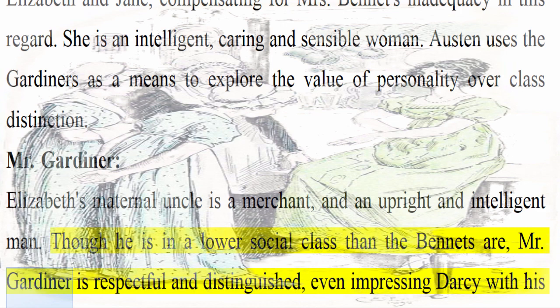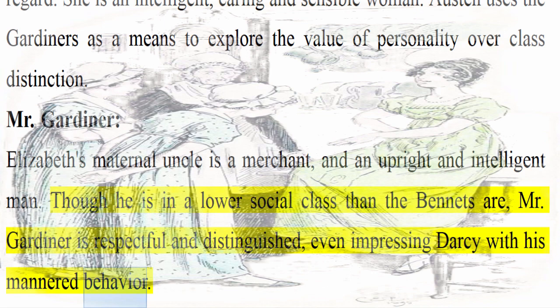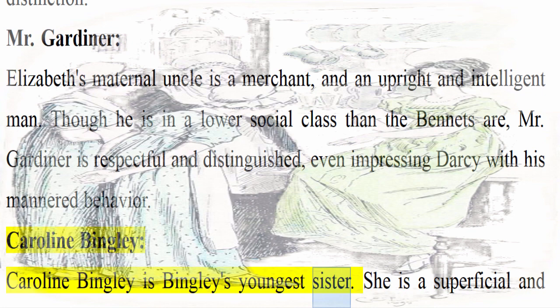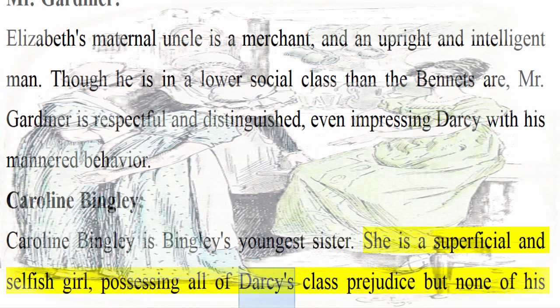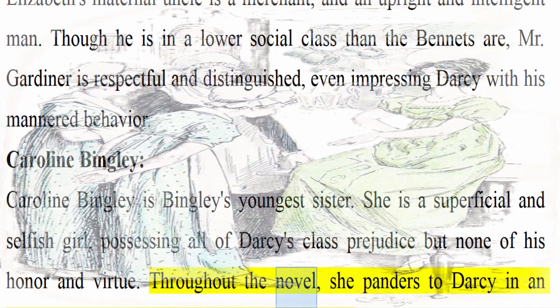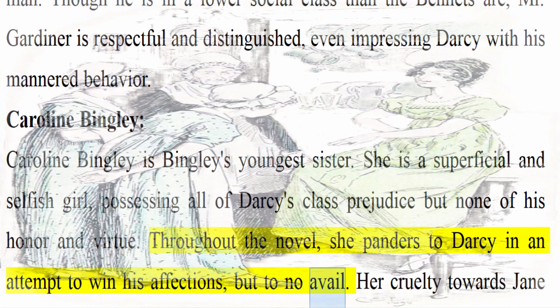Caroline Bingley: Caroline Bingley is Bingley's youngest sister. She is a superficial and selfish girl, possessing all of Darcy's class prejudice but none of his honor and virtue. Throughout the novel, she panders to Darcy in an attempt to win his affections, but to no avail. Her cruelty towards Jane and Elizabeth marks her as a generally unpleasant character.